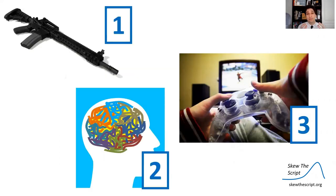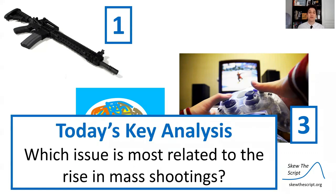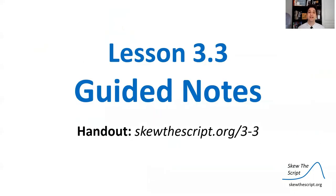There are usually three explanations given in media as well as politics for the prevalence of mass shootings in the United States: the prevalence and availability of assault rifles, mental health issues within the United States, and cultural problems such as violent video games. In today's key analysis, we're going to talk about which of these issues is most related to the recent rise we've seen in mass shootings in the United States.